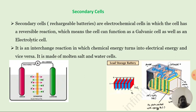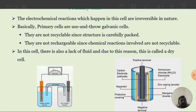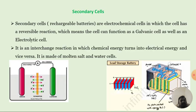Another one is secondary cells. The primary cells, especially the Leclanche cells, are used for watches, remote systems, torch lights, and similar devices. Secondary cells are rechargeable batteries or electrochemical cells in which the cell has reversible reactions, which means the cell can function as a galvanic cell as well as an electrolytic cell.